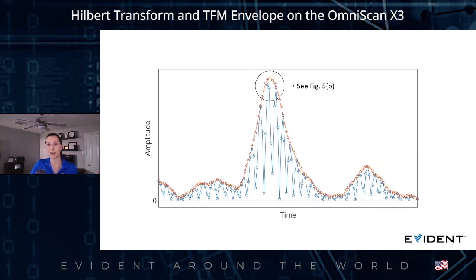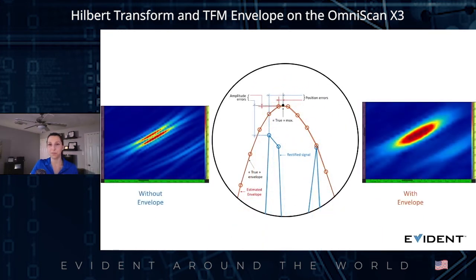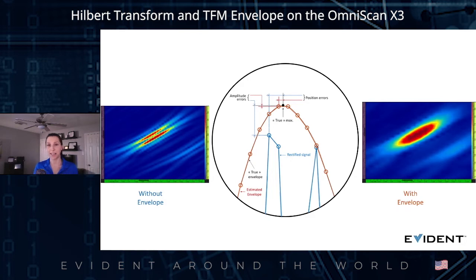Let's have a closer look at the Hilbert Transform envelope. Our true max is being met by the envelope, but not by the original signal in blue. The rectified signal will often have two or more peaks rather than one true max, resulting in a doubling signal as we see on the left, whereas the envelope will have a more concise maximum, making sizing much easier and more accurate, as we can see on the right.